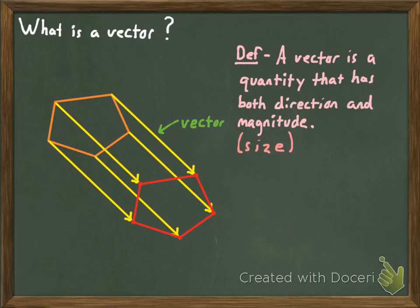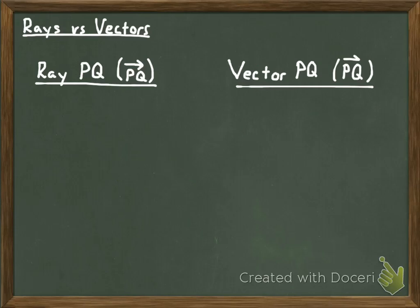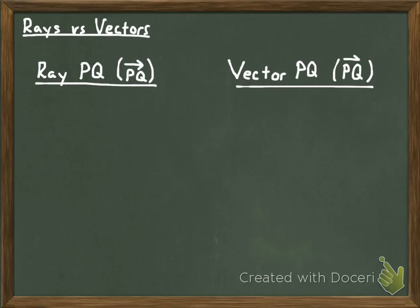If you're describing what a vector looks like, you're going to say it looks like a ray. But there's definitely a difference between a ray and a vector, and I'd like to compare the two right now. Let's look at rays versus vectors. In addition to comparing them, I'm also trying to teach you a little bit about notation here, so make sure you're paying careful attention. I'm going to draw a ray PQ and also a vector PQ.